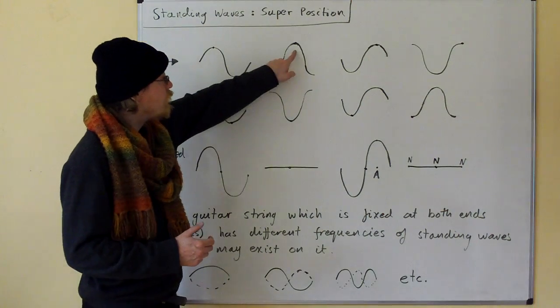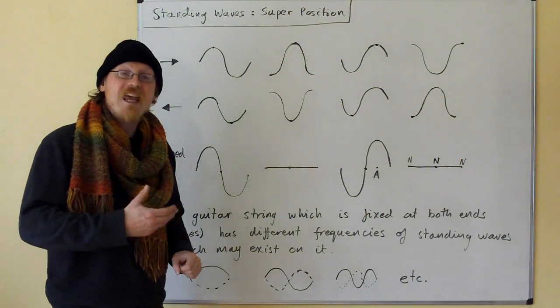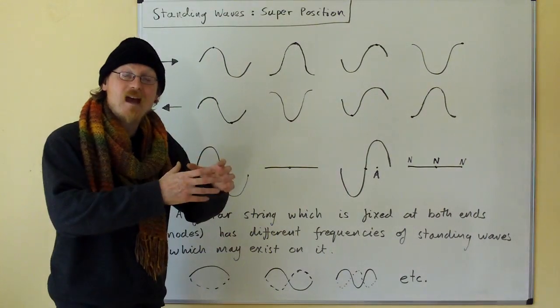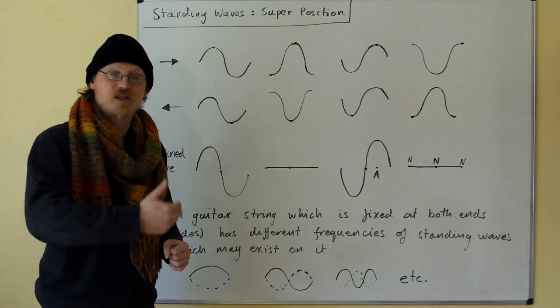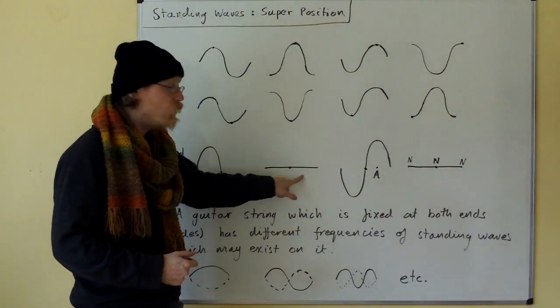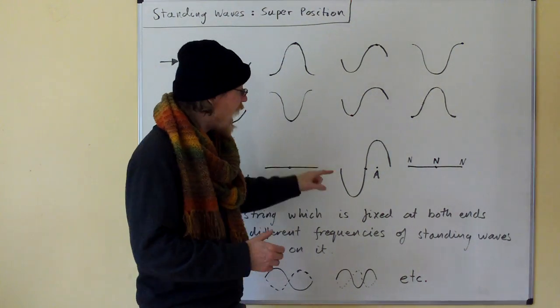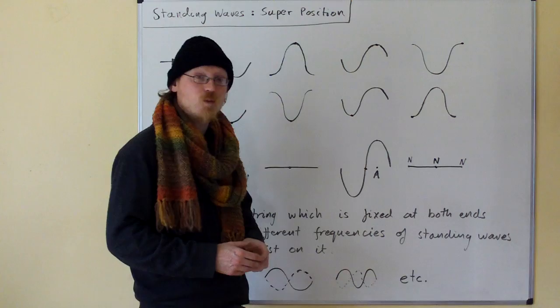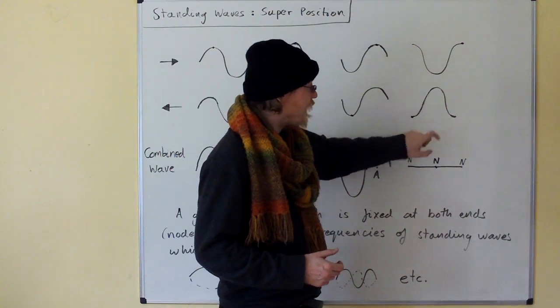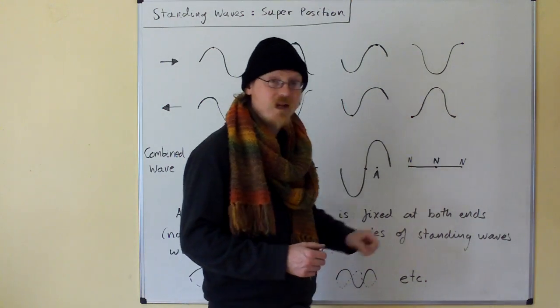These two waves are the opposite. They're in antiphase, so when they add up you get destructive superposition and you end up with no wave at all. Here the waves are in phase again and we get another large wave, and here they're in antiphase again so we get no wave at all.